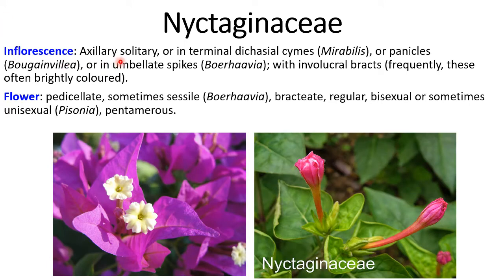Inflorescence is also of different types in this family. For example, it may be solitary axillary, terminal, or in dichasial cymes — also in Mirabilis, that is the 4 o'clock plant. Or it is present in the form of panicles in Bougainvillea. Here you can see it is umbellate spikes in Bougainvillea with involucral bracts, which are frequently brightly colored.